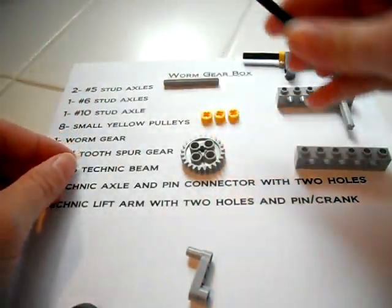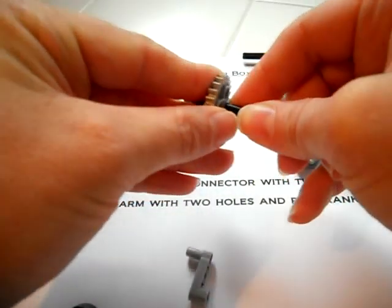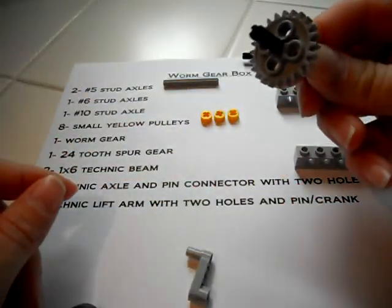I'm going to take a No. 6 stud axle, insert it inside a 24-tooth gear. So, it's like this.